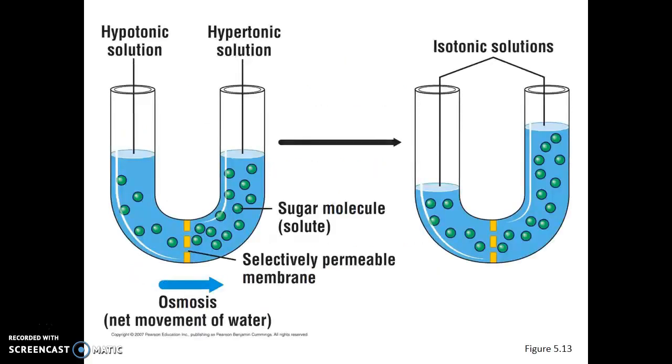Back to our example with that horseshoe shaped test tube, we now see the hypotonic solution is the one that has less sugar dissolved into it. The hypertonic solution is the one that has more sugar dissolved into it. So even though the sugar cannot move, the water the solvent is able to diffuse through that bottom membrane and we end up with two solutions that are isotonic.